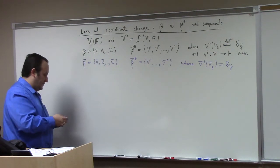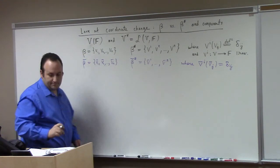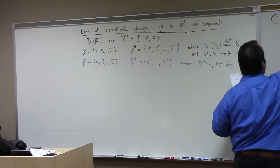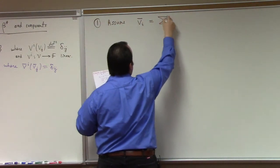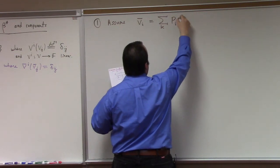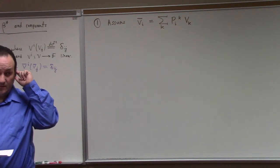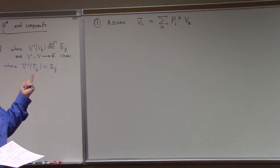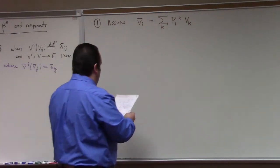Here's where I'm going to start. Number one: assume that V̄ᵢ equals the sum over k of Pᵢᵏ Vₖ. The P's are constants — we can do this because the V's and the V̄'s both form a basis, so there have to exist constants Pᵢᵏ such that each V̄ᵢ is attained as a linear combination of the Vₖ's.